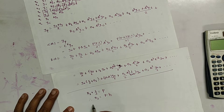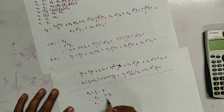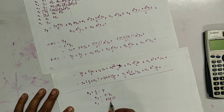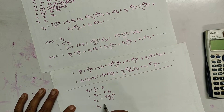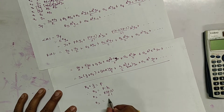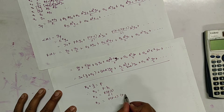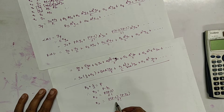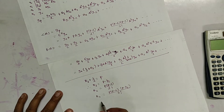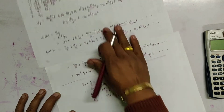Similarly, we get b2 as p(p-1) over 2-factorial, and b3 as p(p-1)(p minus 1/2) over 3-factorial. On putting the values of b1, b2, and b3 into the polynomial which we have supposed: